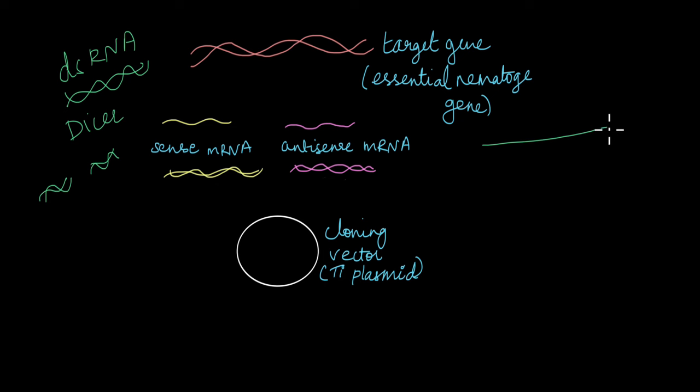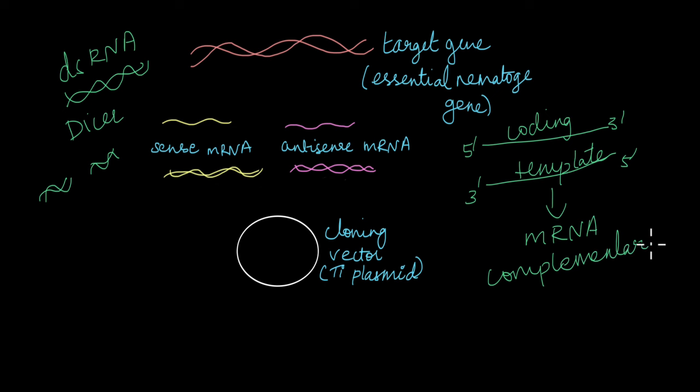So this double-stranded RNA needs to be made with the sense mRNA and the antisense mRNA. But here is the problem. When a gene is being transcribed, one strand acts as the coding strand and the other strand acts as the template strand. So only one of these strands is essentially being transcribed into mRNA. So scientists needed to figure out a way to make sure both these strands were transcribed into mRNA so that they would be complementary to each other and they would form the double-stranded RNA.